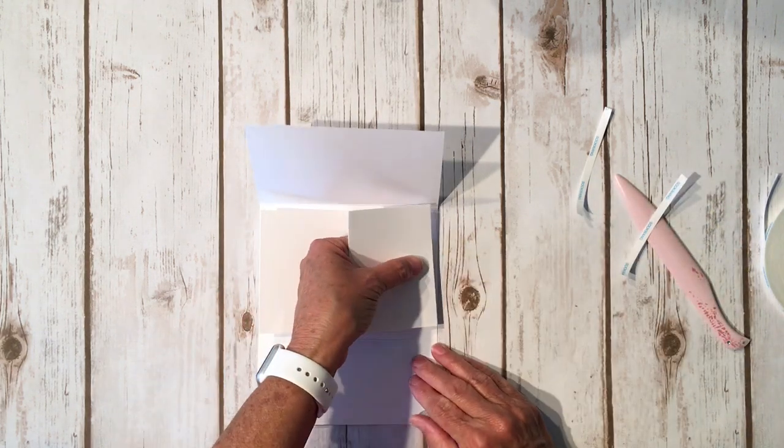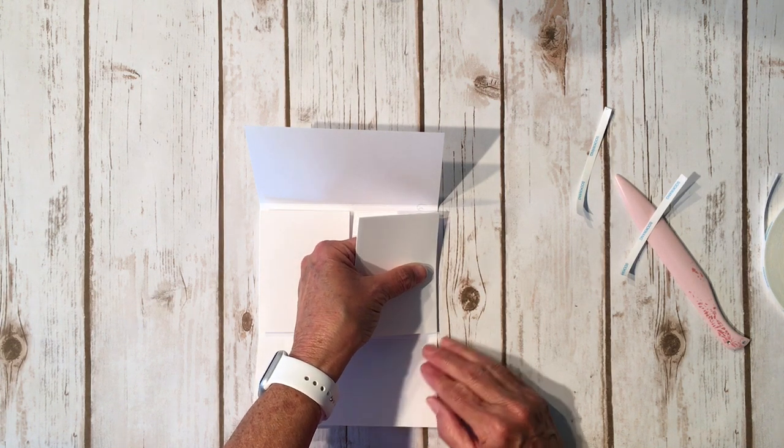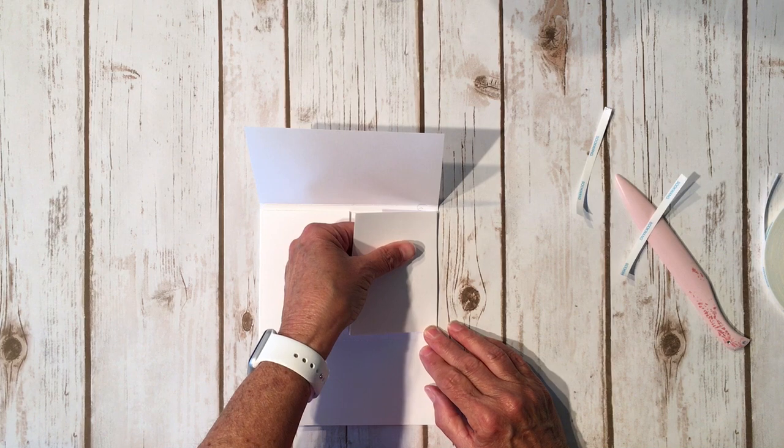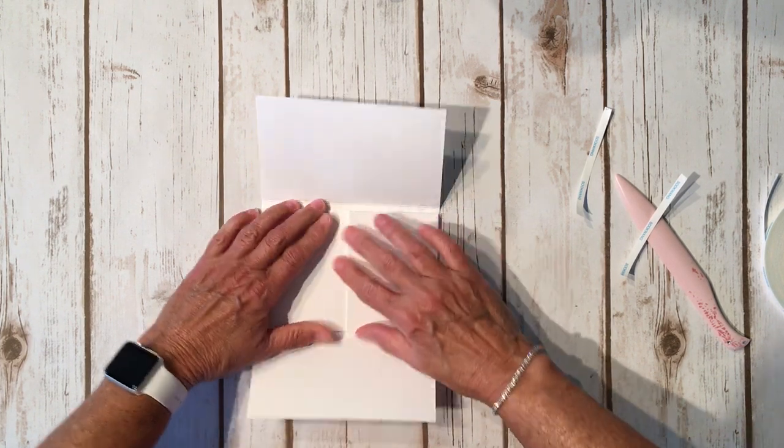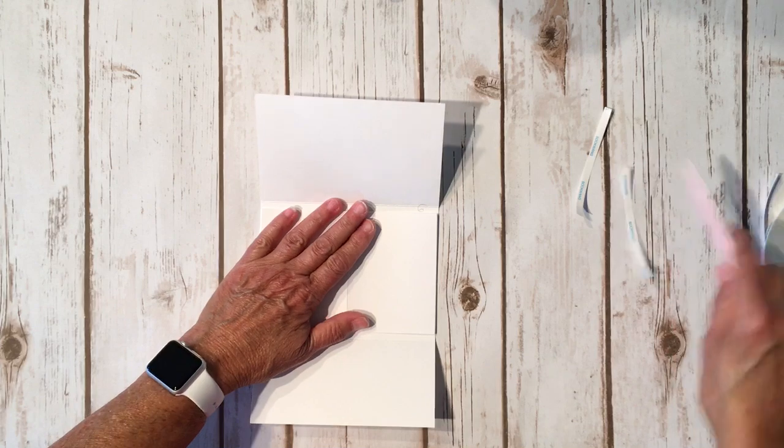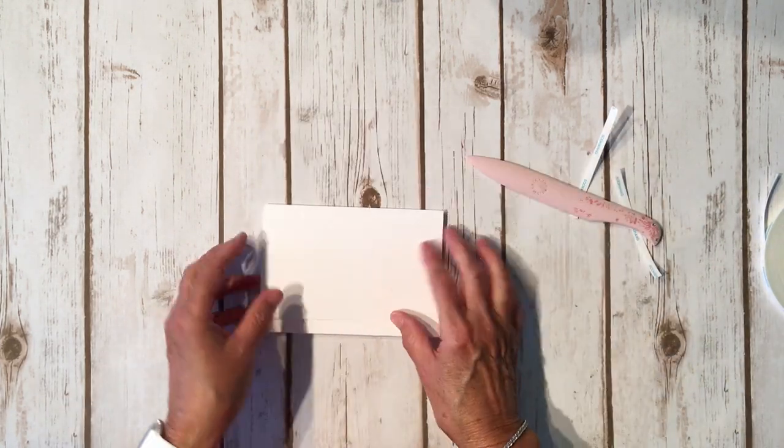Then I'm going to put this one in like this, again in between those inside score lines. Make sure they're even. Perfect. Then that's going to fold like that, and that's going to fold like that.